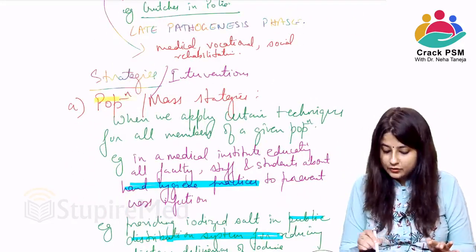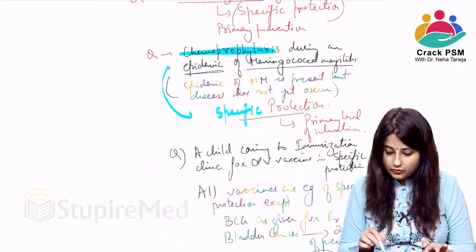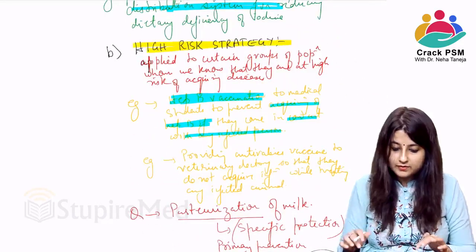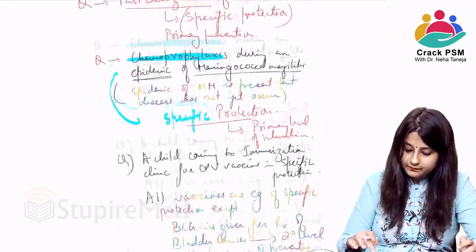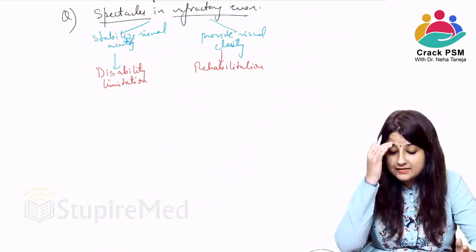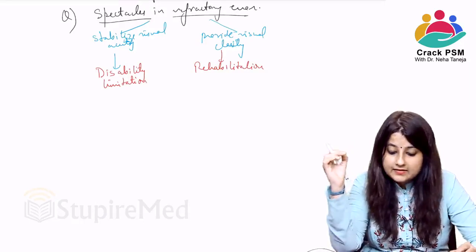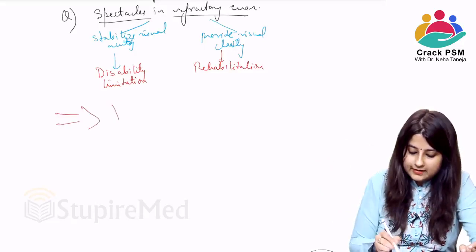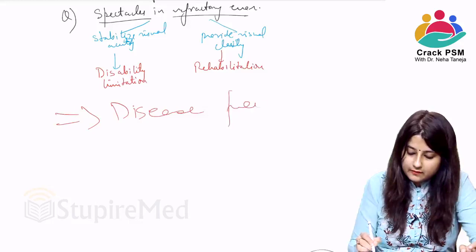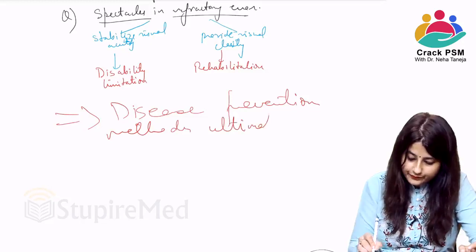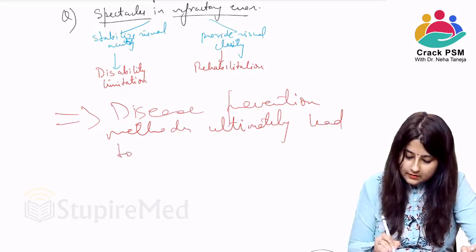Strategies are directed either towards the entire population or to high-risk groups. Disease prevention efforts ultimately lead to disease control.